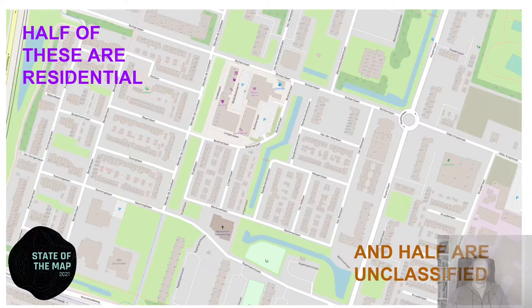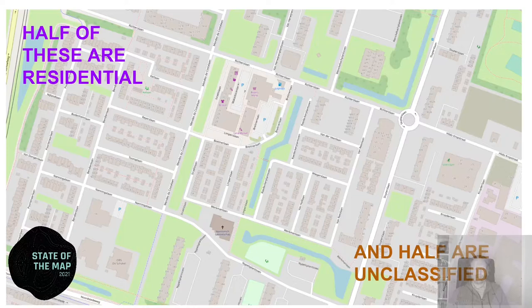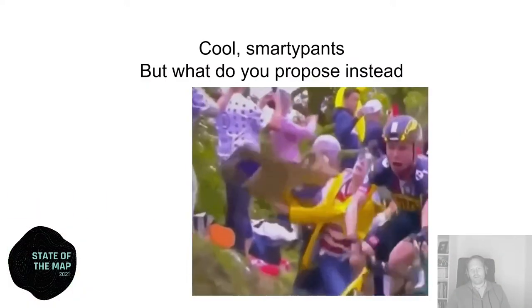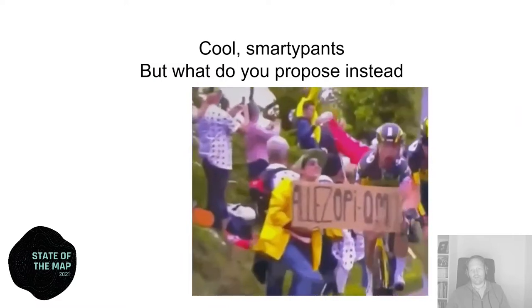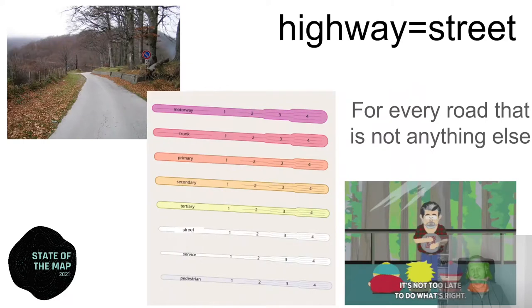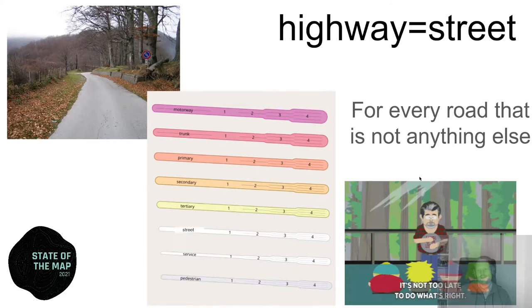There are all kinds of definitions, like there should be houses - but to me that's all pretty minor stuff. So what do I propose instead? I think we should combine unclassified and residential into a simple 'highway=street' for every road that's not motorway, trunk, primary, secondary, or tertiary. I don't think it's too late to take action on this. Let's just use 'highway=street' and forget about the difference between unclassified and residential. I think it's the way to go. Thank you for hearing me out - I know it's a difficult topic but I think it's an important one. I hope you enjoy State of the Map. Thank you, bye.